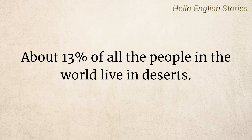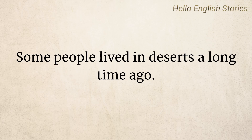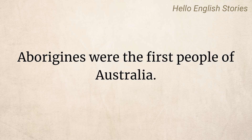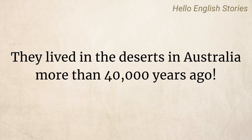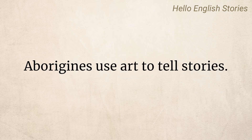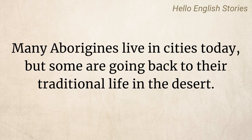About 13% of all the people in the world live in deserts. Some people lived in deserts a long time ago. Aborigines were the first people of Australia. They lived in the deserts in Australia more than 40,000 years ago. Aborigines use art to tell stories. Many Aborigines live in cities today, but some are going back to their traditional life in the desert.